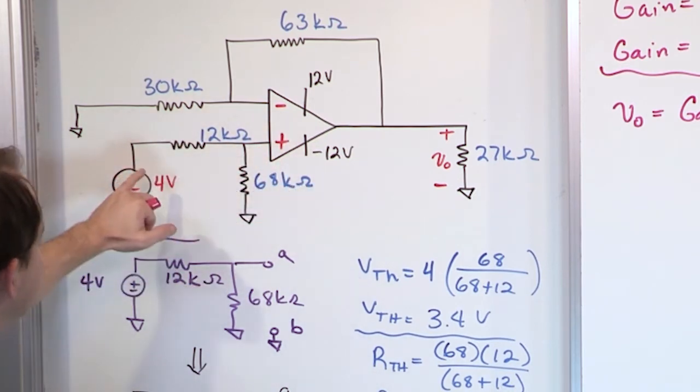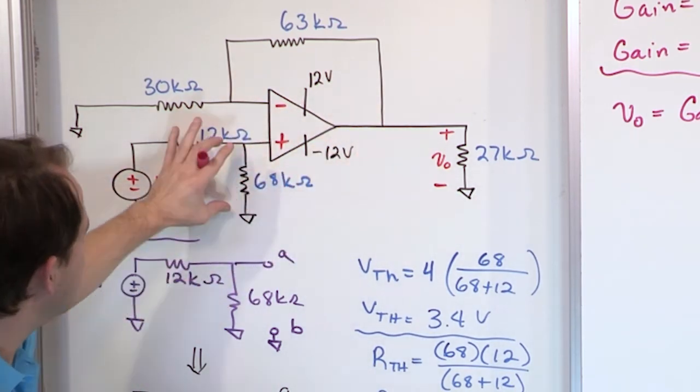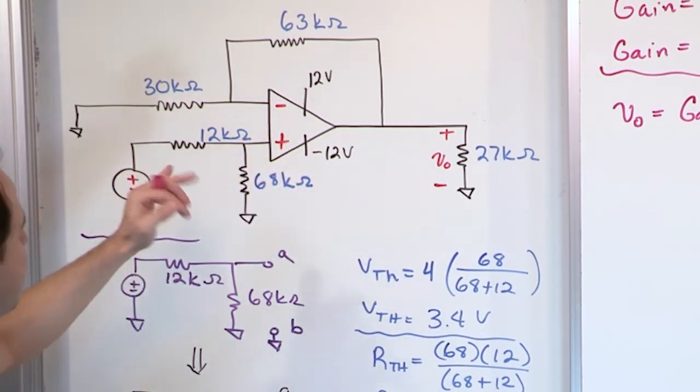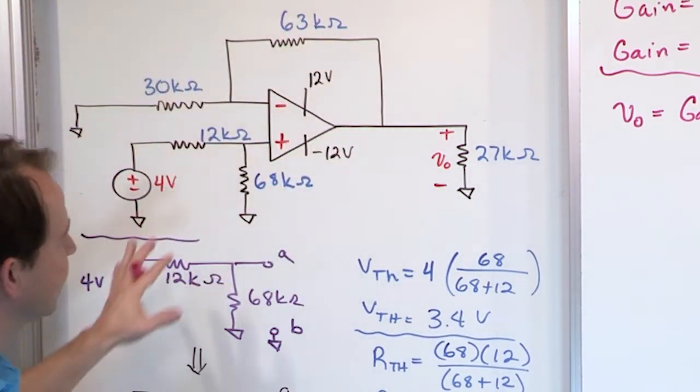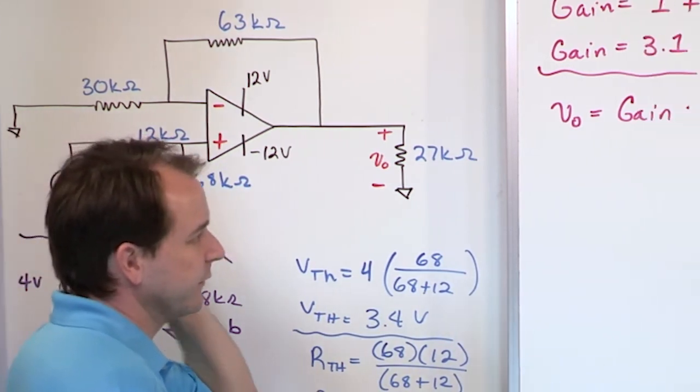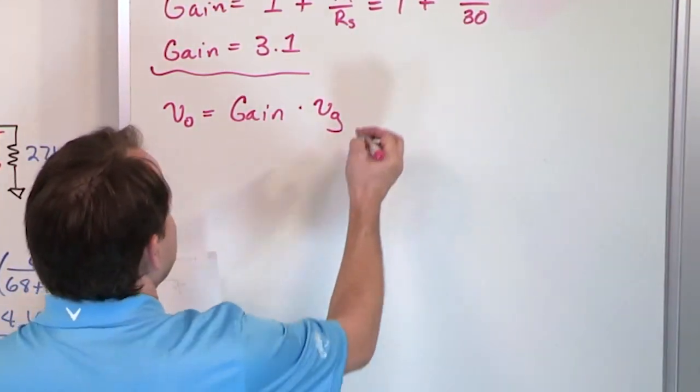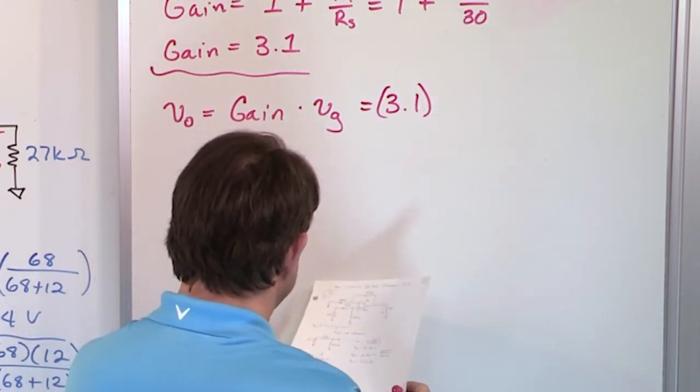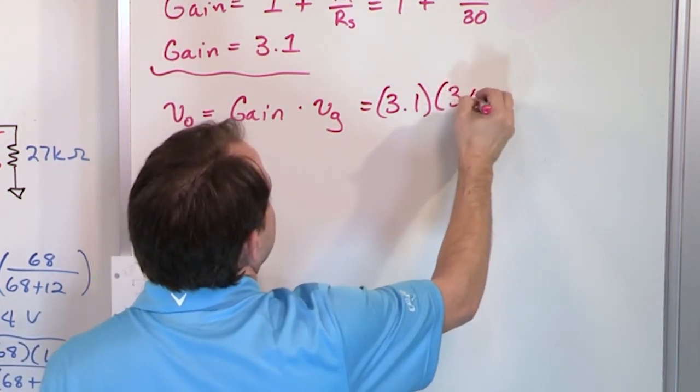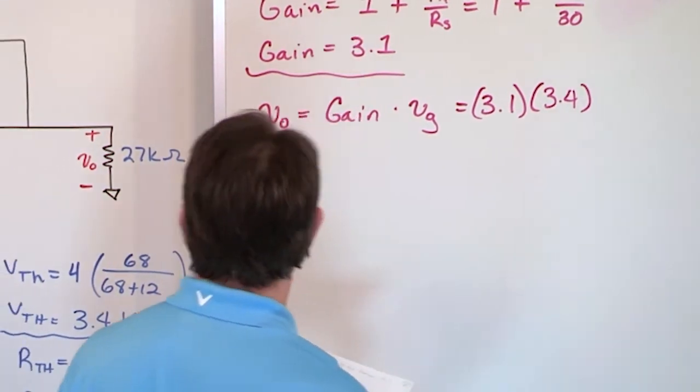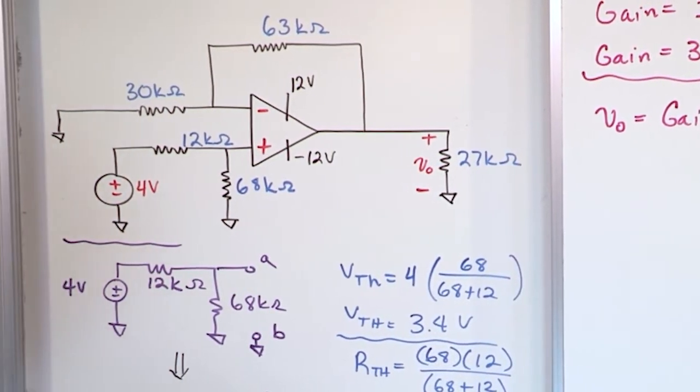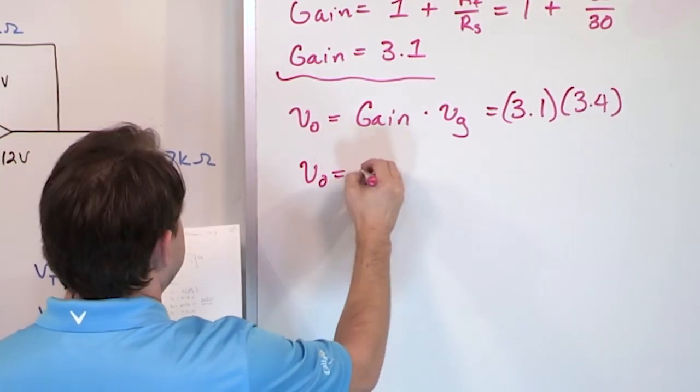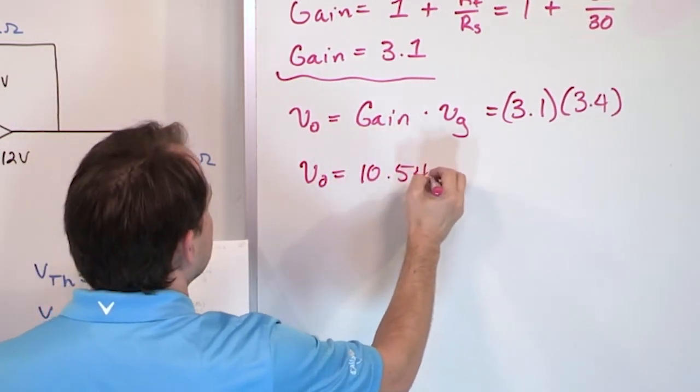That's why we're finding a Thevenin equivalent because this is open circuit, so this voltage divider governs what the voltage is basically here, and because of the virtual short, that's how the analysis progresses from our original deal. So don't put that original voltage in. We're going to put the 3.1 in, but we're going to use the 3.4 volts that we have for the input voltage. Basically, this voltage we calculated there for the Thevenin equivalent. So the output is then going to be 10.54 volts.